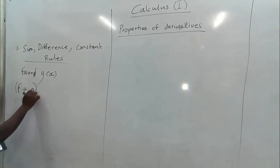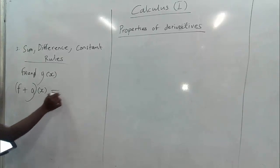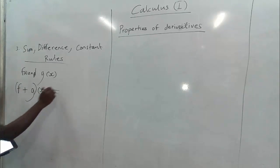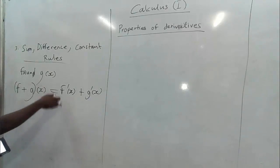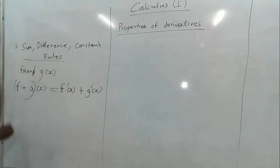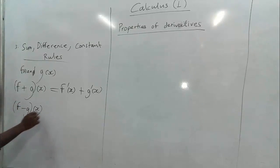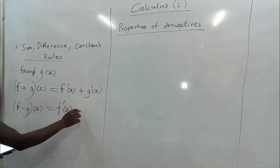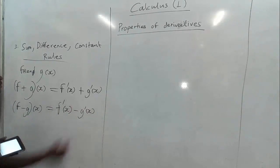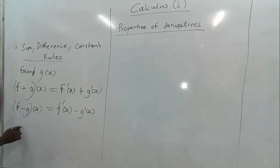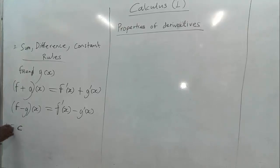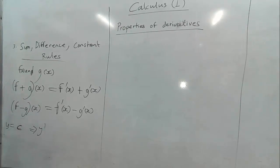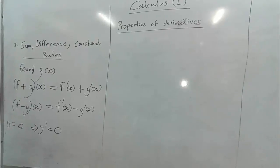For sum: when we have f plus g of x and we want to find the derivative, we differentiate term by term, giving us f prime of x plus g prime of x. For difference: f minus g of x gives us f prime of x minus g prime of x. Also, when we have a constant c, if y equals c, then y prime equals zero. Anytime we differentiate a constant we get zero.